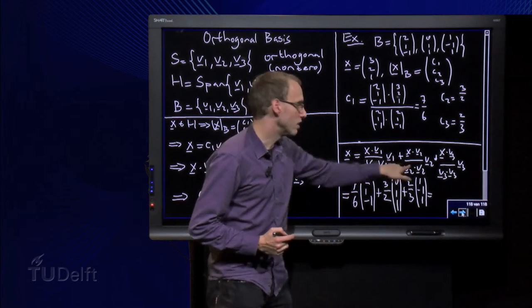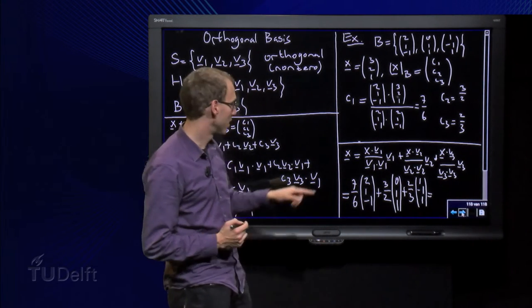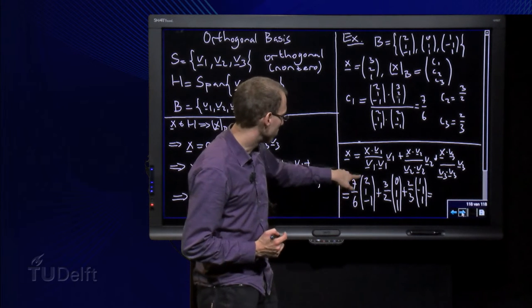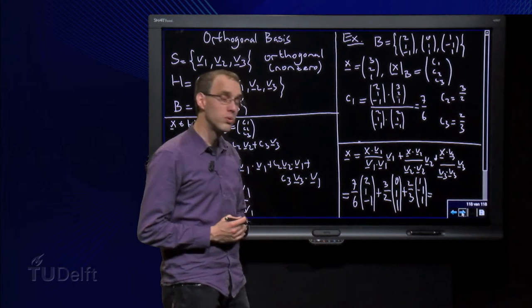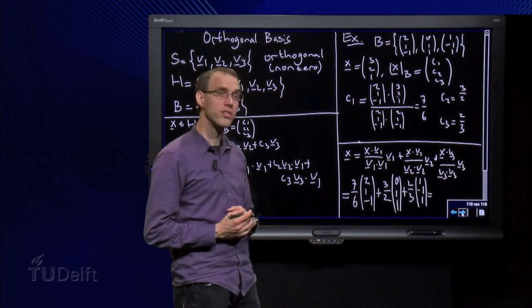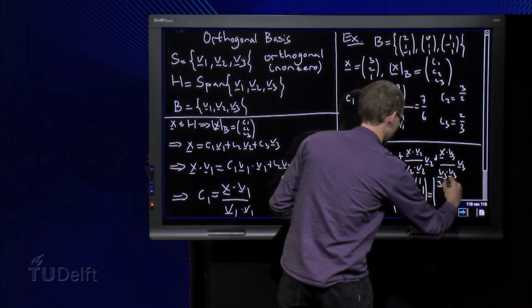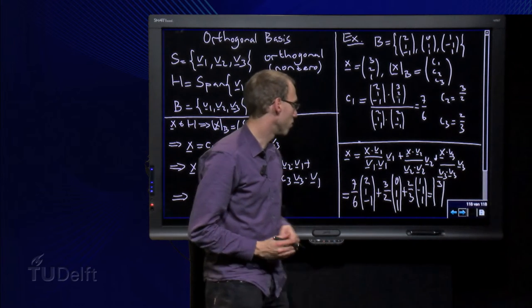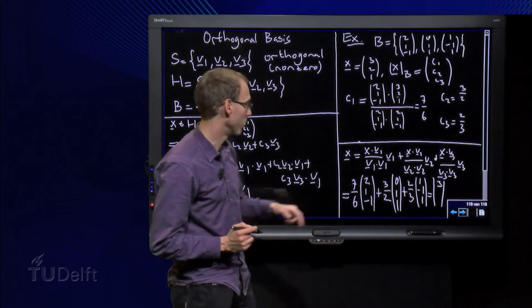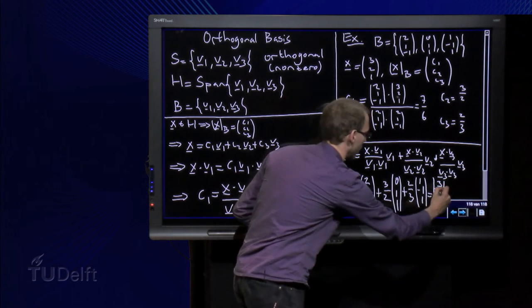And then we compute this and see whether it indeed equals the original x. We have 2 times 7 over 6, so 7 over 3 plus 2 over 3 equals 9 over 3 equals 3. Second component 7 over 6 minus 4 over 6 equals 3 over 6, so 1 half. 3 over 2 plus 1 half equals 2, so that's fine.